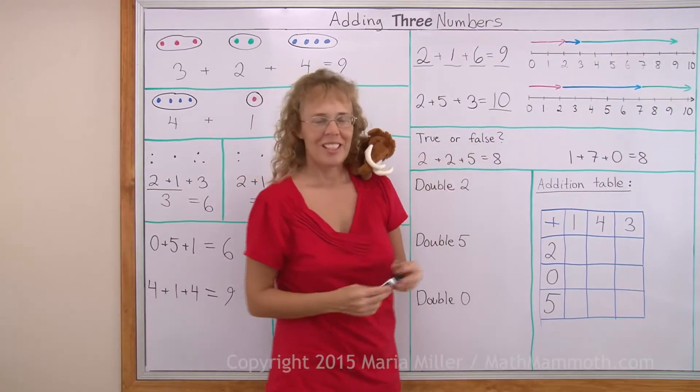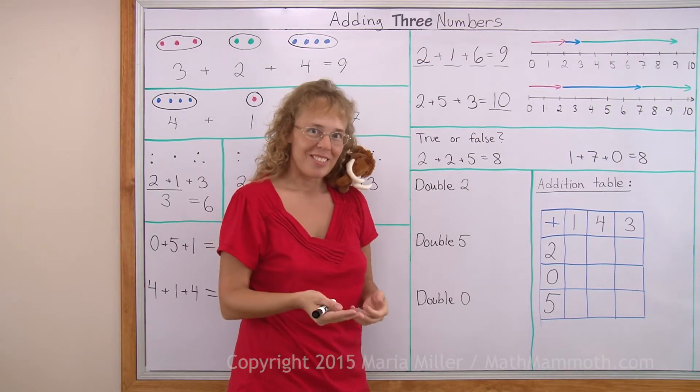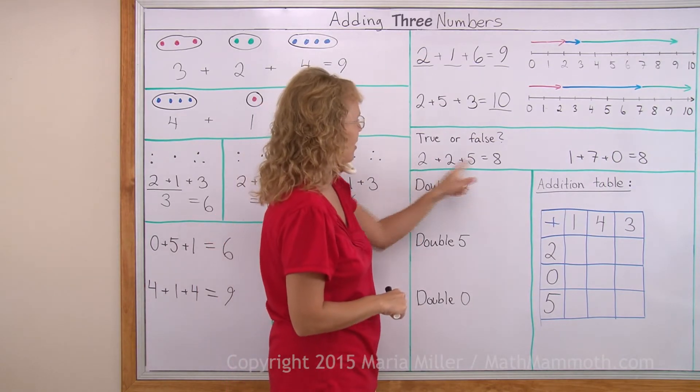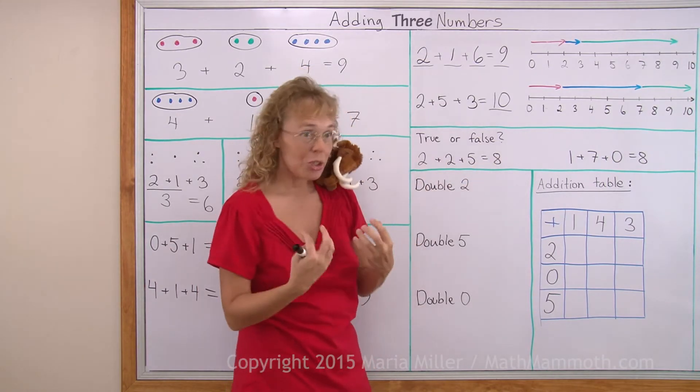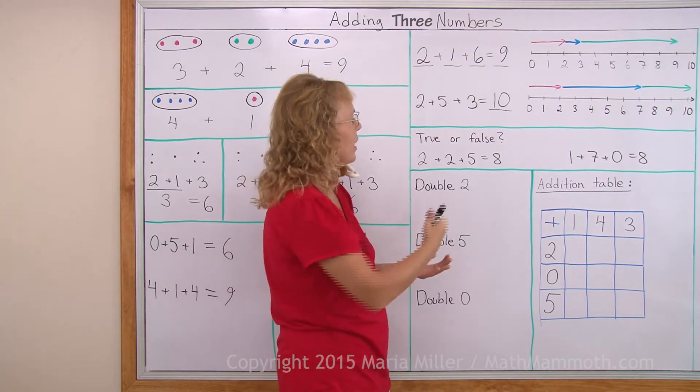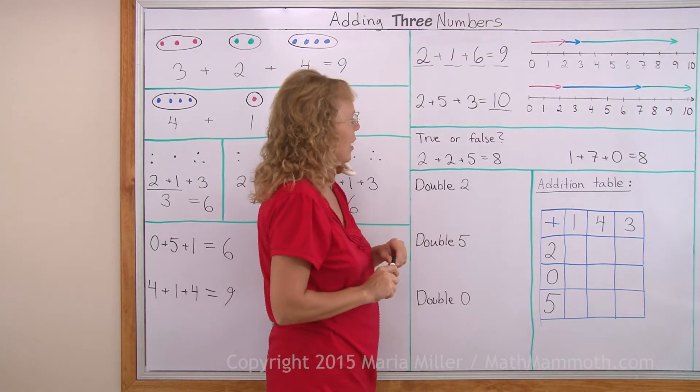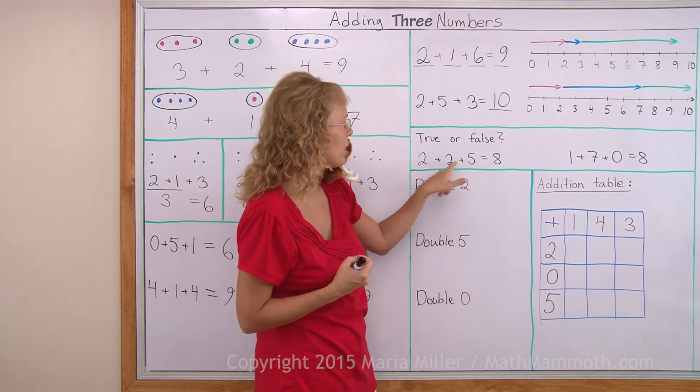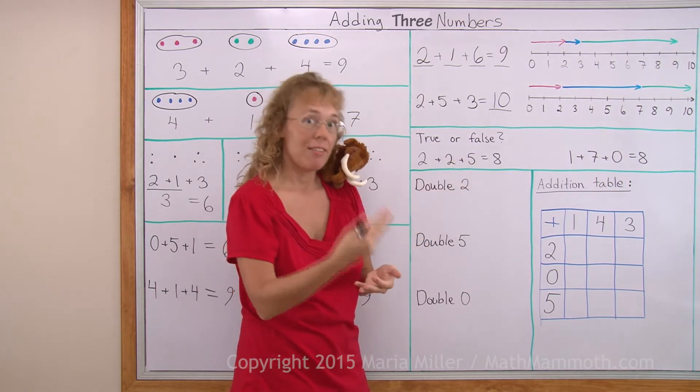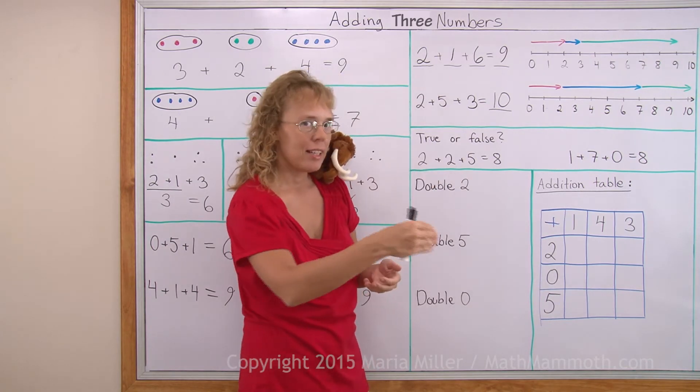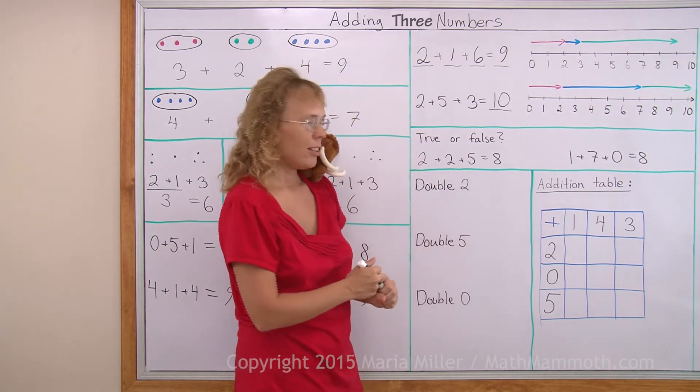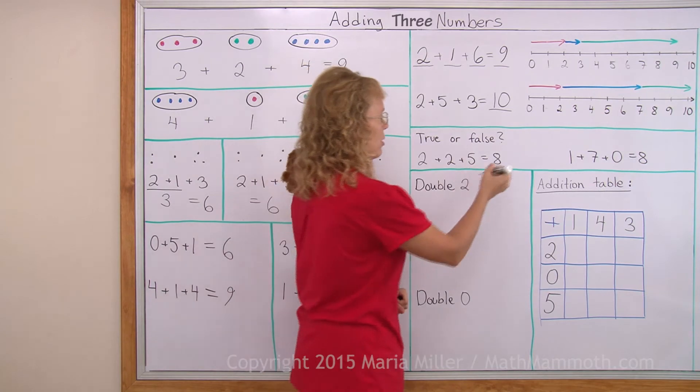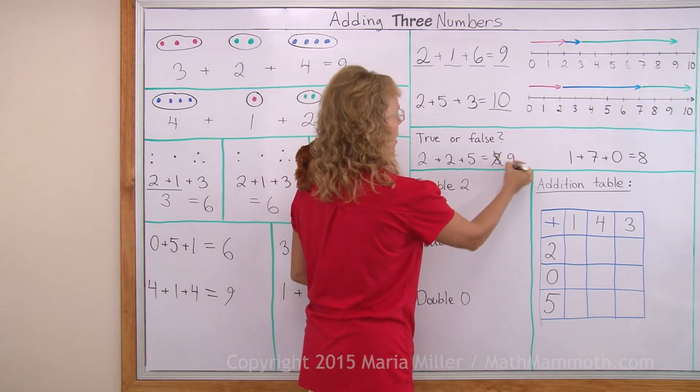True or false. That means right or wrong. Is this right? Is this correct? Or is it true? Two plus two plus five makes eight. Again, it might be easiest to start adding from your biggest number. Five plus two, that makes seven. And then seven and two more would be seven, eight, nine. It would be nine. So that's not true, it's false. That's not right. Let's put nine there.